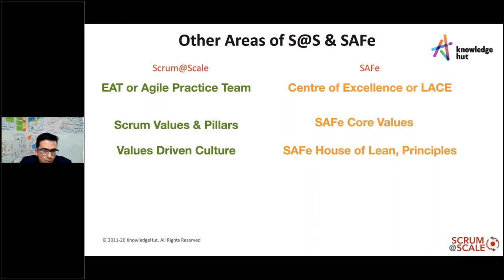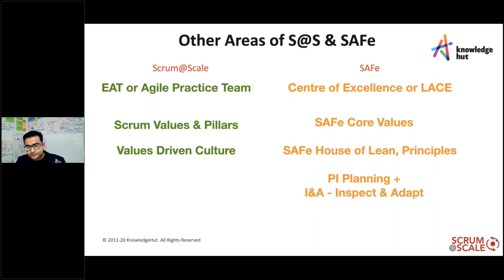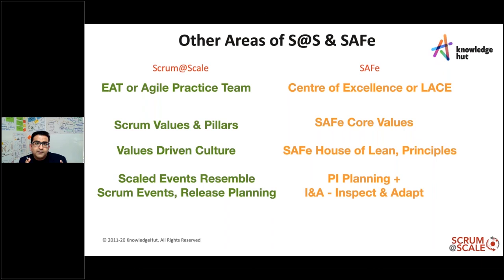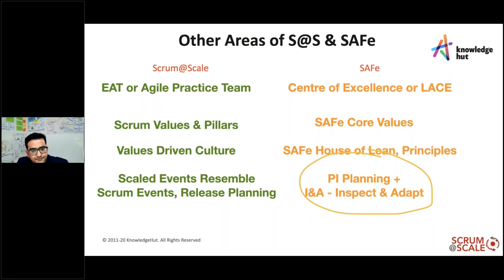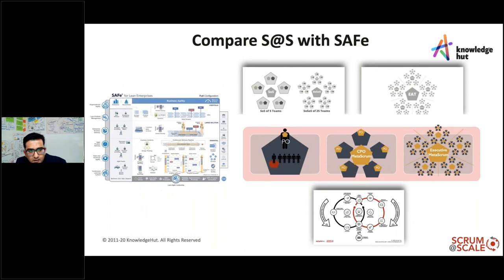SAFe's House of Lean talks about alignment, transparency, built-in quality, and program execution — similar to a values-driven culture. In Scrum at Scale, leadership support provides minimal viable bureaucracy — a guiding coalition. This is what you see in PI planning and Scrum events, where leadership teams align and clarify everything. For each Scrum of Scrums, there's a shared common backlog feeding a network of teams, requiring a product owner team including a Chief Product Owner as the final authority.